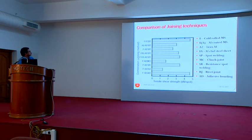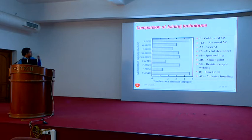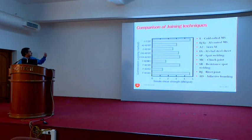A comparative chart shows strength for different joining methods — spot welding of aluminum to steel, friction welding, mechanical joining, and adhesive bonding of aluminum and steel. Adhesive bonding gives the highest strength under static room-temperature conditions, though not under dynamic or high-temperature conditions.